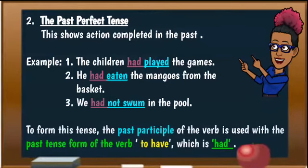Now look at our past perfect sentences. To form the past perfect tense, the past participle form of the verb — play, eat, and swim — is used with the past tense form of the verb 'to have,' which is 'had.' So if we look at it, we see 'had' used in all the sentences, no matter plural or singular — whether the subject is a noun or pronoun — 'had' is being used with the past participle form of the verb.